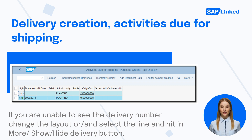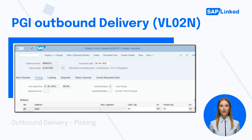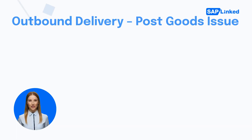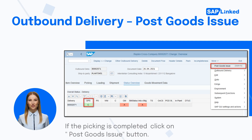This action is to complete the post goods issue for the outbound delivery in order to show that the stock has left the supplying plant. Go to transaction code VL02N, enter the delivery number, and click Enter. On the picking tab, enter the picking quantity and storage location first, then press Enter. To check the status of your outbound delivery, go to the Status Overview tab. If picking is completed, click on the Post Goods Issue button.